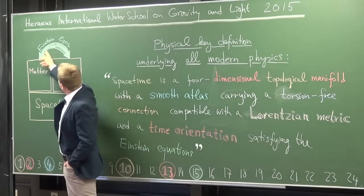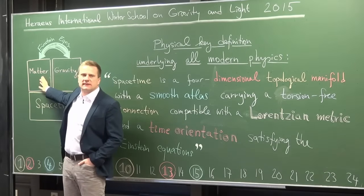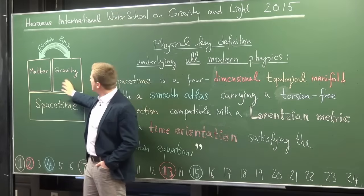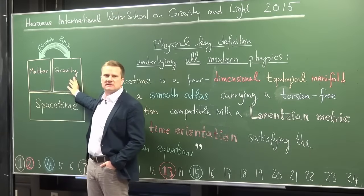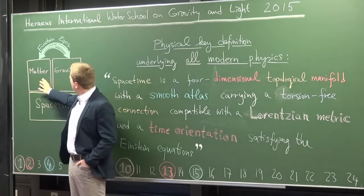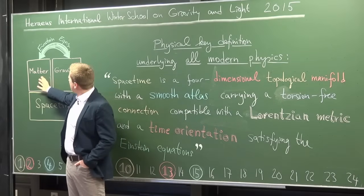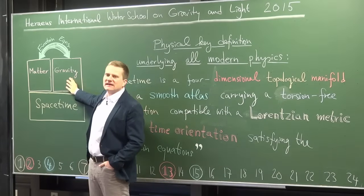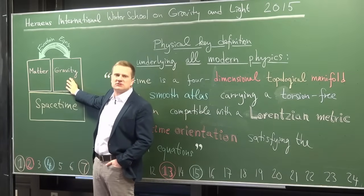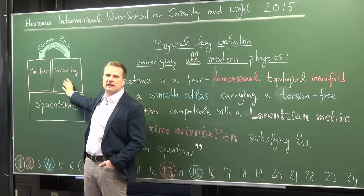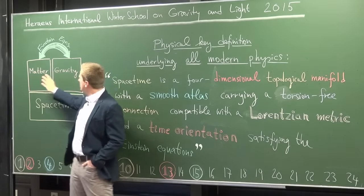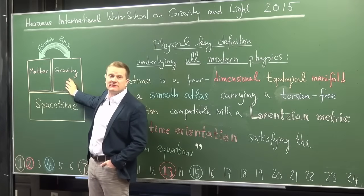These Einstein equations connect the matter contents of the universe with the gravity in the universe. Of course, matter gravitates. But what is new in general relativity is that matter — the gravitational effect of matter — is actually encoded in a change of the structure of space-time itself, namely in the curvature of space-time. One side of the Einstein equations talks about matter, the other side talks about gravity.